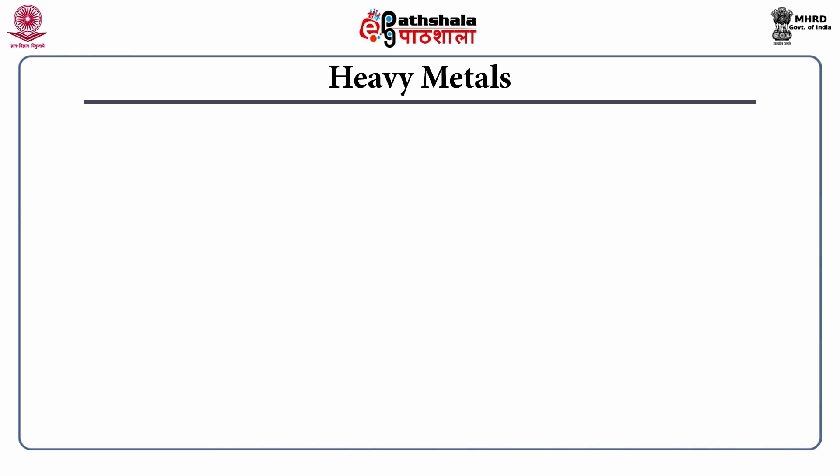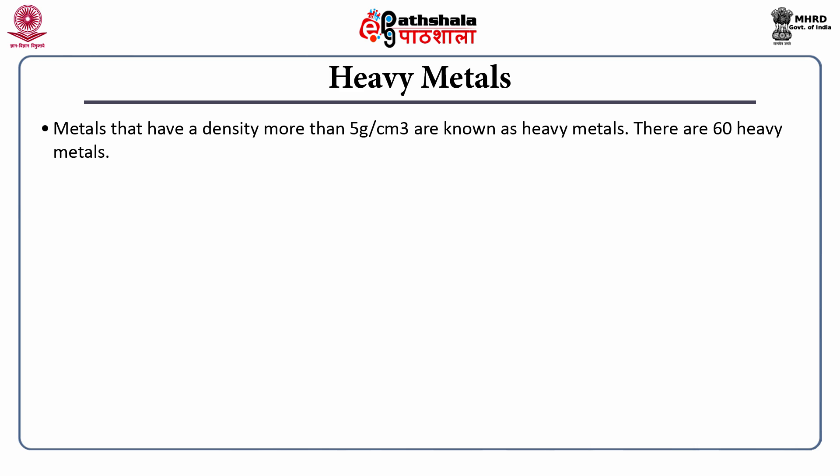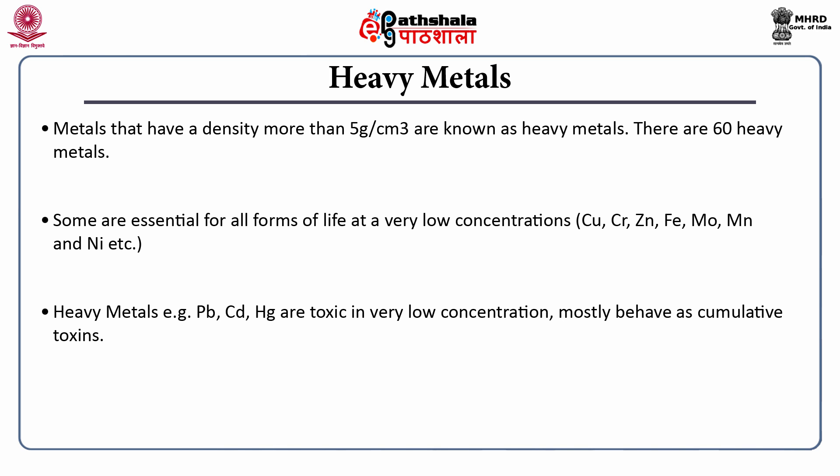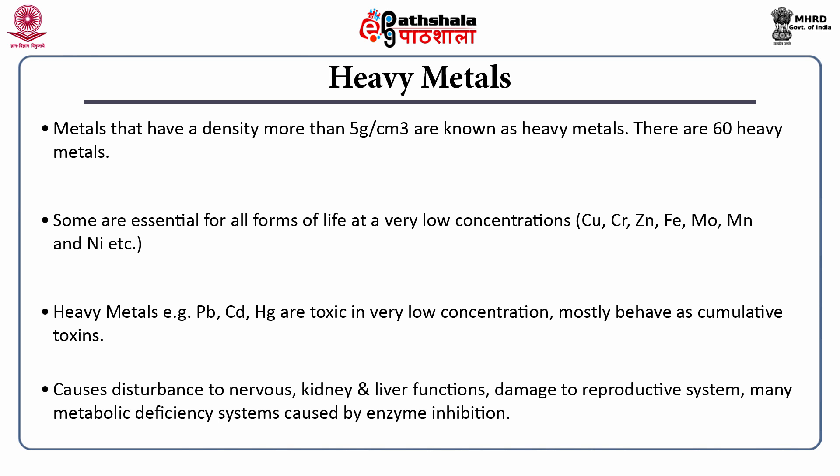First of all, heavy metals. Heavy metals have a density more than 5 grams per cubic centimeter and there are 60 heavy metals in our periodic table. Some are essential for all life forms at very low concentrations, but few are toxic in very low concentrations and regarded as toxic heavy metals. They mostly behave as cumulative toxins. The accumulation of high levels of heavy metals in humans can cause disturbance in nervous system, abnormal kidney and liver functions, damage to reproductive system and many metabolic deficiencies due to enzyme inhibition.